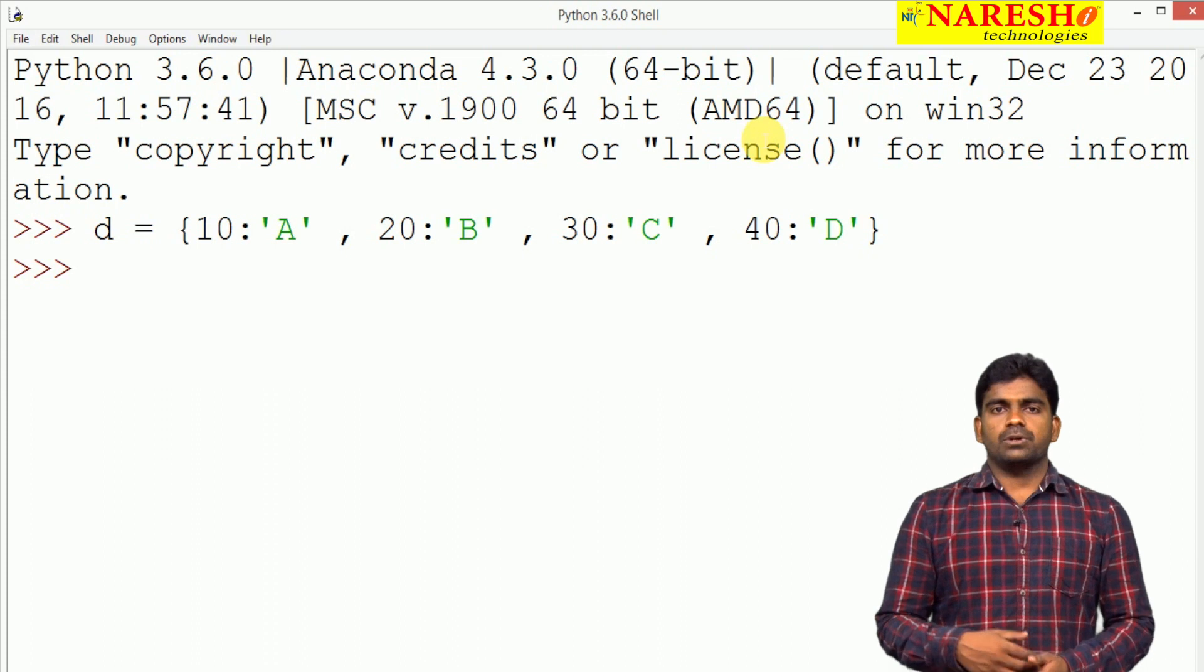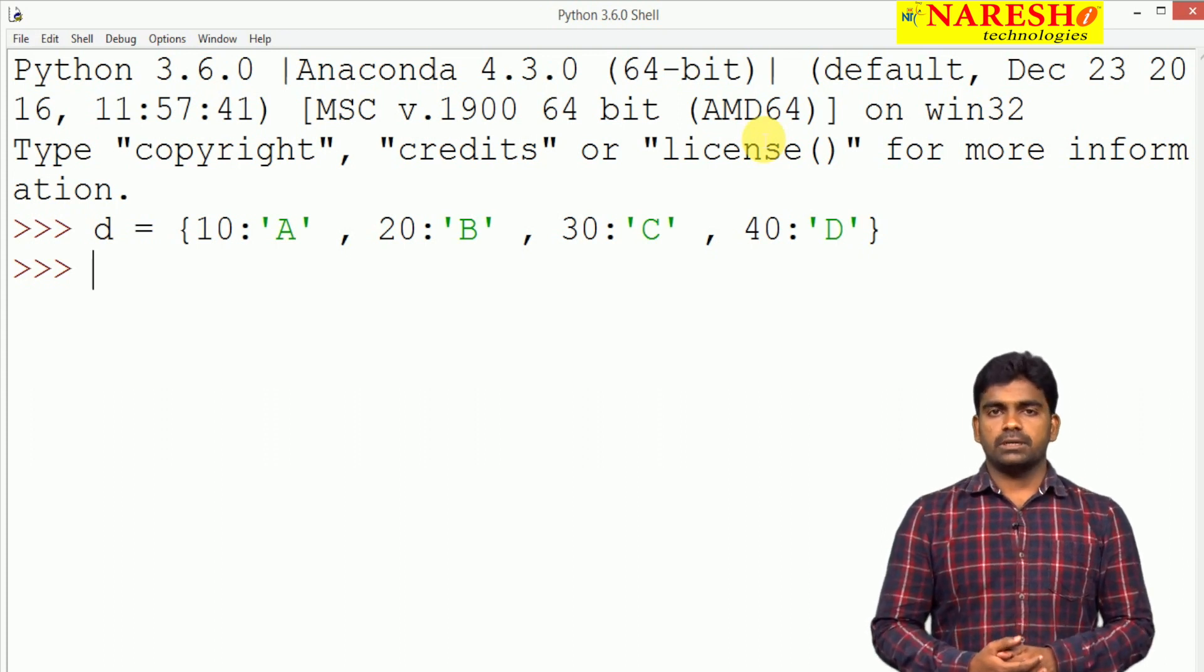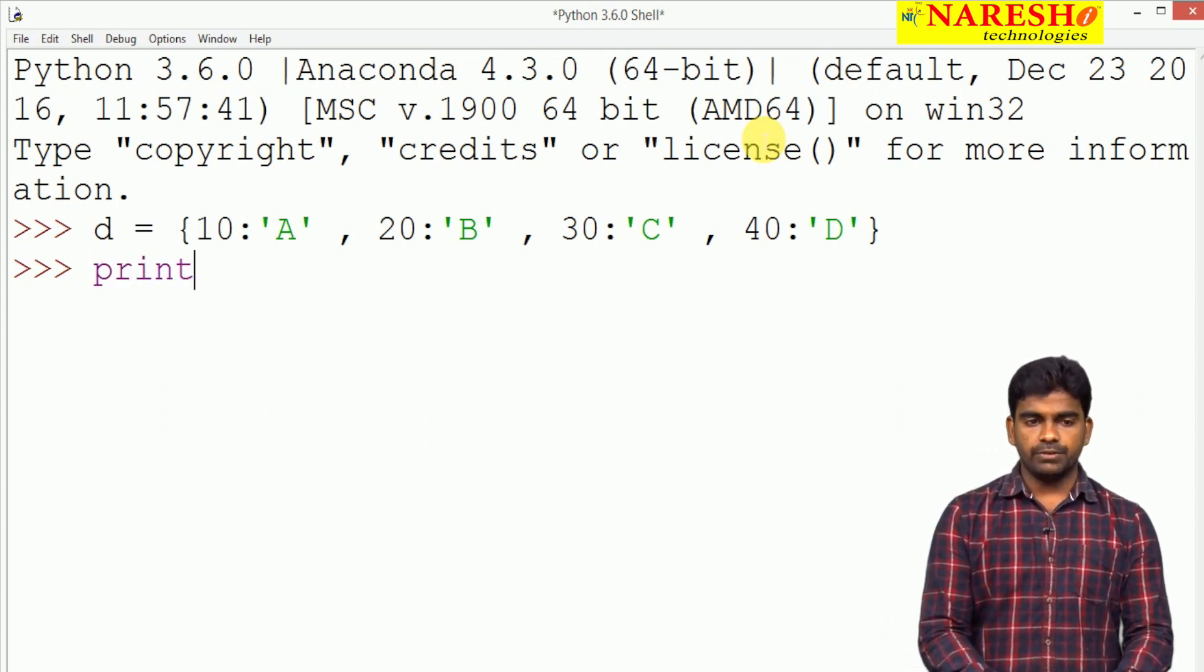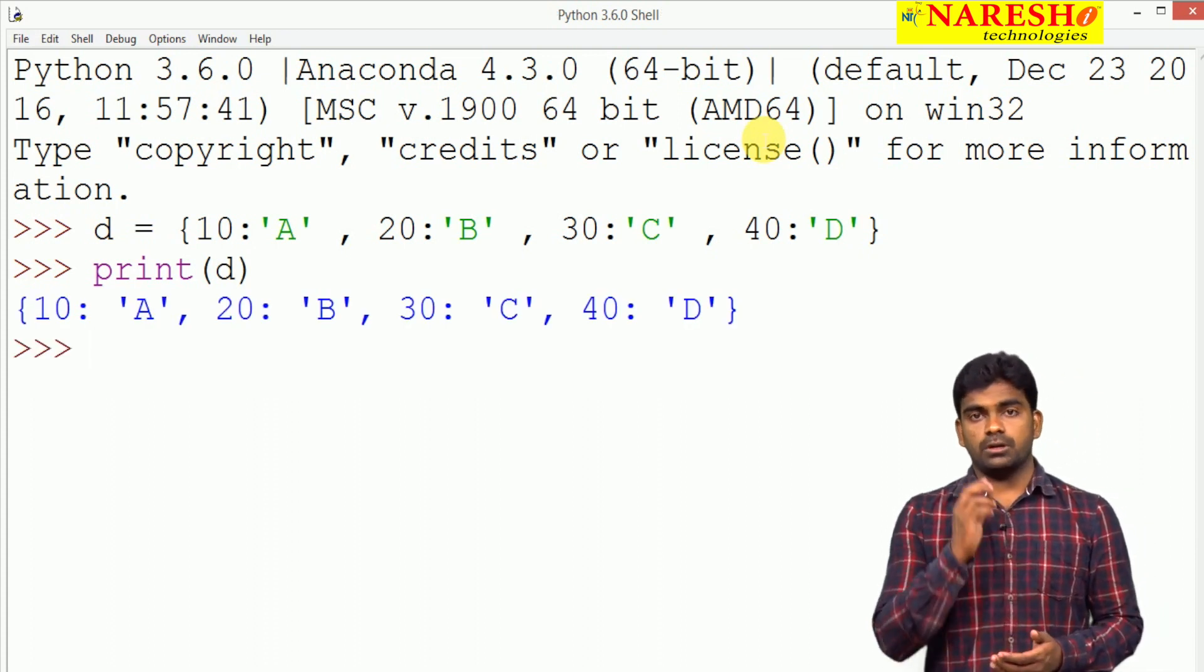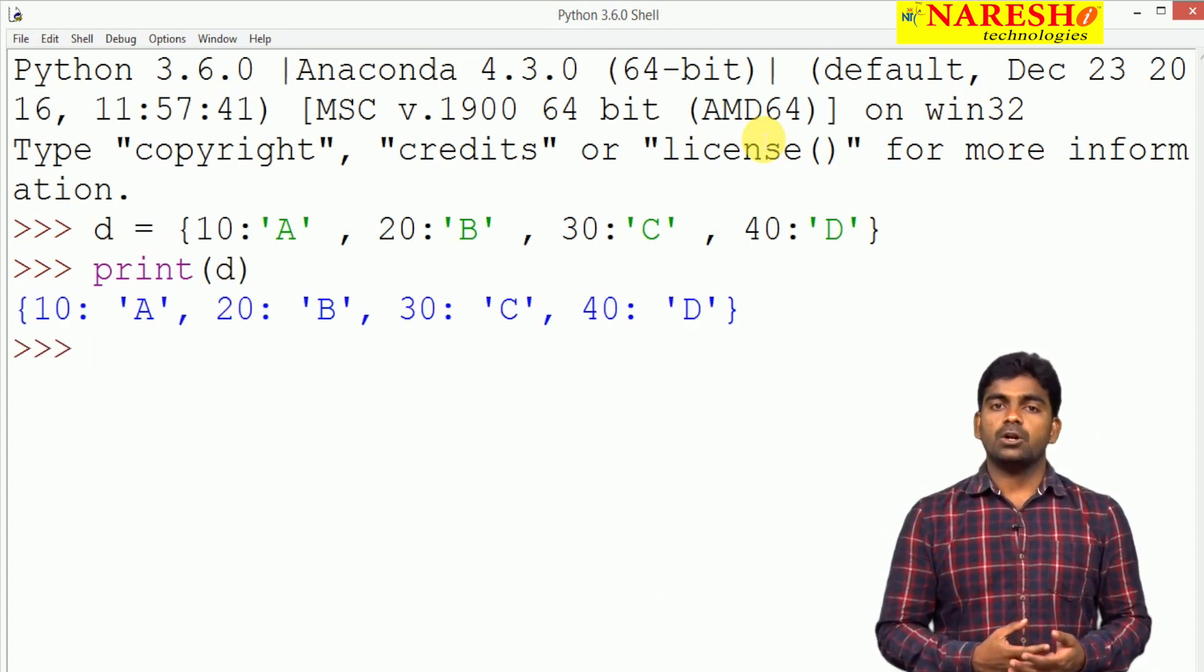How can we access the elements? What predefined functions is it providing? Whenever we are displaying print d directly, it will display all the elements in the same order because we know the dictionary is an ordered collection.